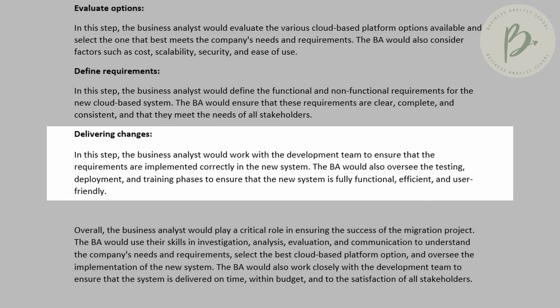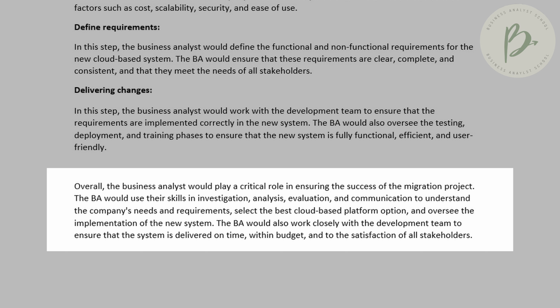The sixth and final stage of the BA approach is to deliver the change. This links with the project approach — delivering the change involves testing, deployment, and training. The BA aspect here means working closely with the development team to ensure requirements are implemented correctly in the new system before we go live and before we test. We then oversee the testing, deployment, and training phases to ensure the system is fully functional, efficient, and user-friendly.